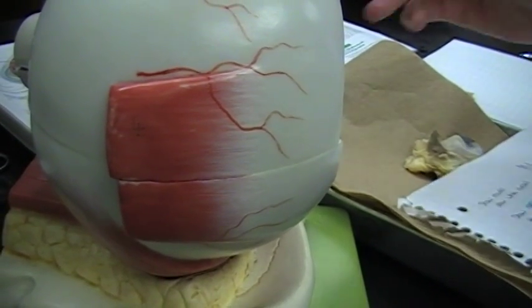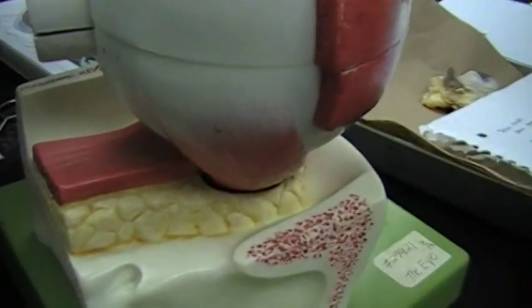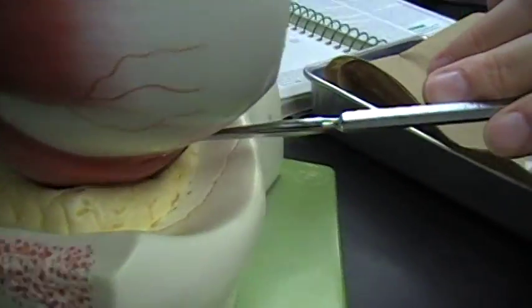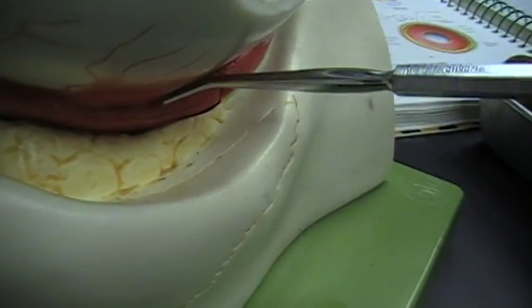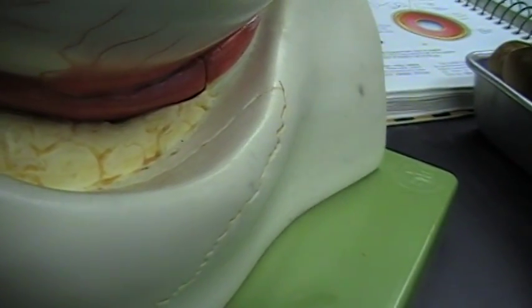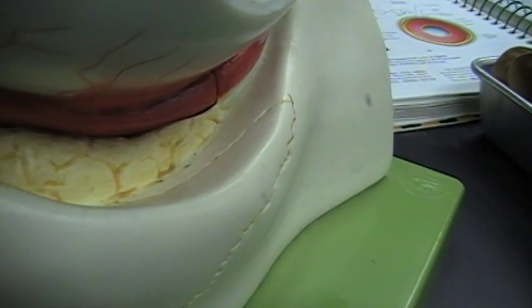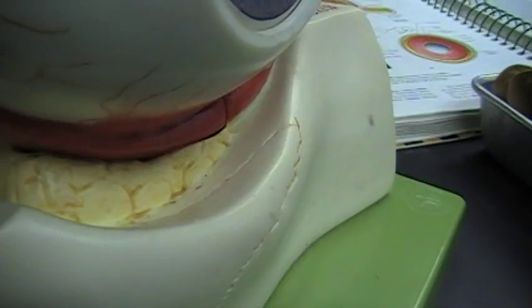The next muscle is this muscle right here, and it goes all the way to the front of the eye at the bottom right here, and it is called the inferior rectus muscle. It depresses the eye and turns the eye medially, and it is also controlled by the oculomotor nerve.